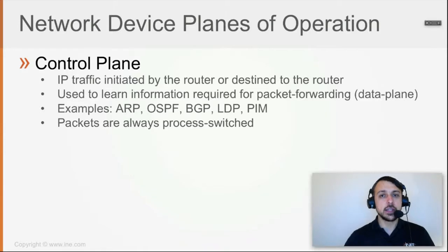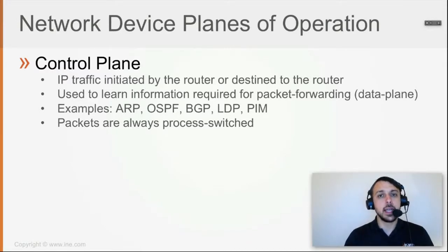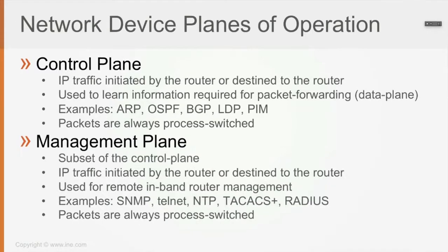If the router doesn't learn about destinations through routing protocols, or doesn't learn the IP-to-MAC binding through ARP, then the router cannot route packets back and forth. The control plane facilitates the data plane's forwarding capability.